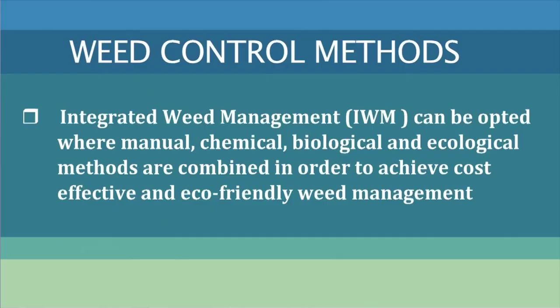Generally, we should avoid using only chemical methods of weed control as much as possible. In nursery plants, up to 6 months after planting of cuttings, application of chemicals is strictly prohibited. It is better to follow integrated weed management practices where manual, chemical, biological, and ecological methods are combined in order to achieve cost-effective and eco-friendly weed management. Dear learners, we have come to the end of the discussion. If proper management is not taken at the proper time, weeds can create serious problems in the tea plantation.